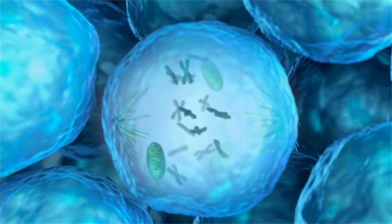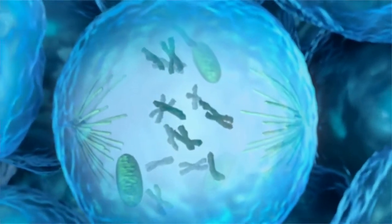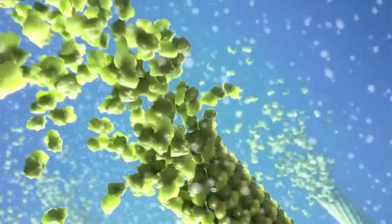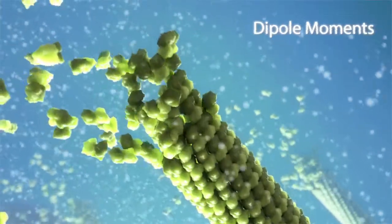During the metaphase stage of cell division, cells take on a rounded shape as the mitotic spindle forms. The spindle fibers, microtubules, are created through the polymerization of tubulin dimers, which exhibit large dipole moments.